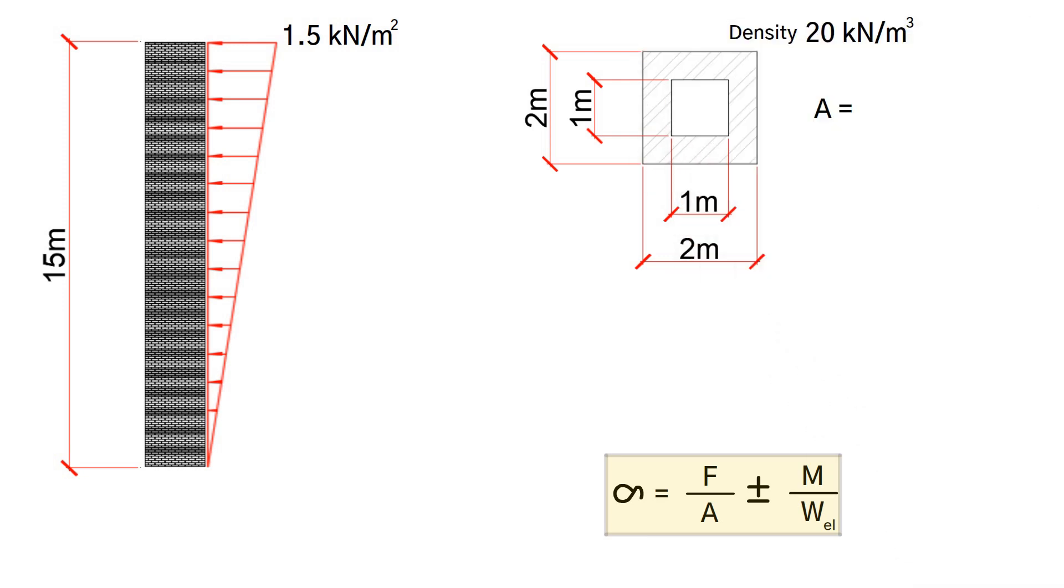As a result, the area of the external square, 2 meters times 2, minus the area of the internal square, 1 meter times 1, gives us a total of 3 square meters.